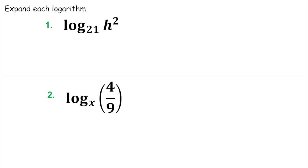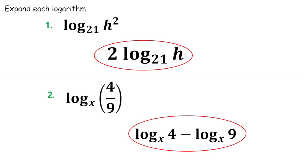Try these two — push pause, then come back and check your answers. The two just comes right out in front — it was log base twenty-one, so that stays log base twenty-one. On the second one, both logs are log base x, so those remain the same. The nine was on the bottom, so we have the subtraction sign before the nine.